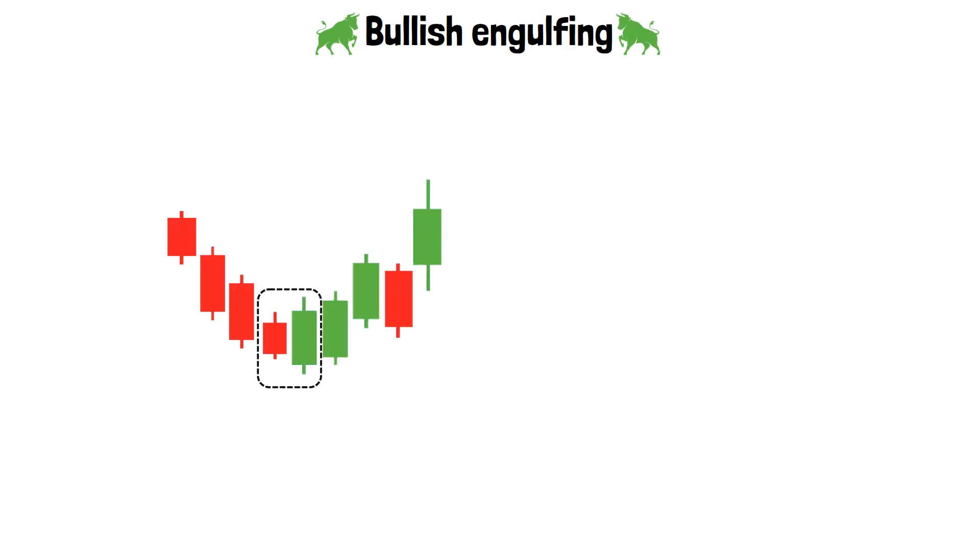Another bullish pattern is known as the bullish engulfing. It's called that because it's formed when a bullish candlestick engulfs the previous bearish candlestick. It's a bullish pattern because it suggests that a price increase is on its way.